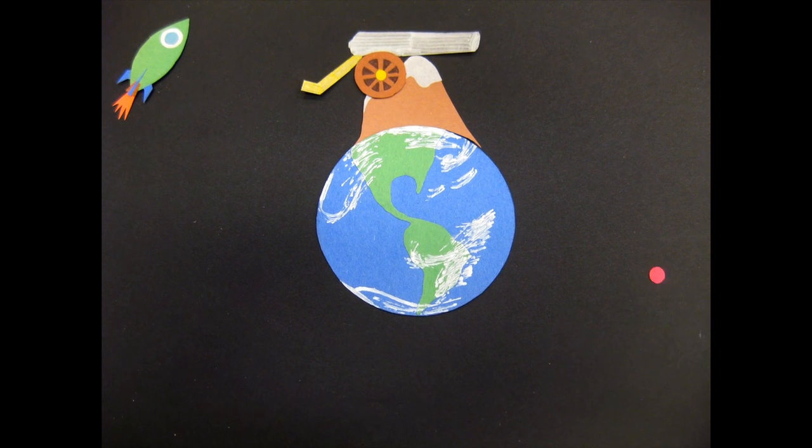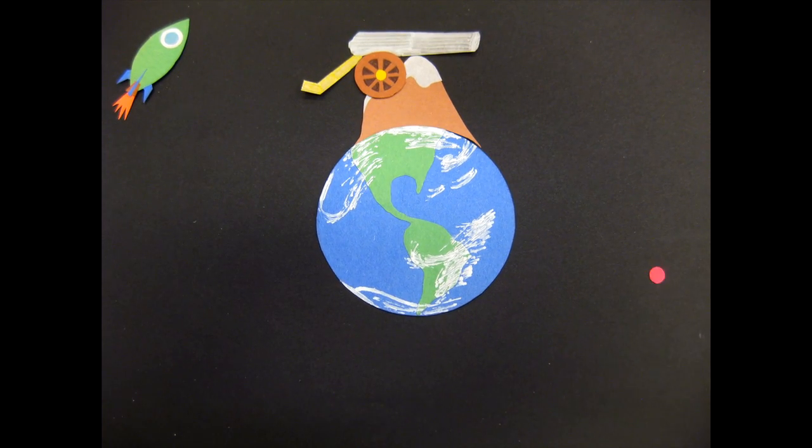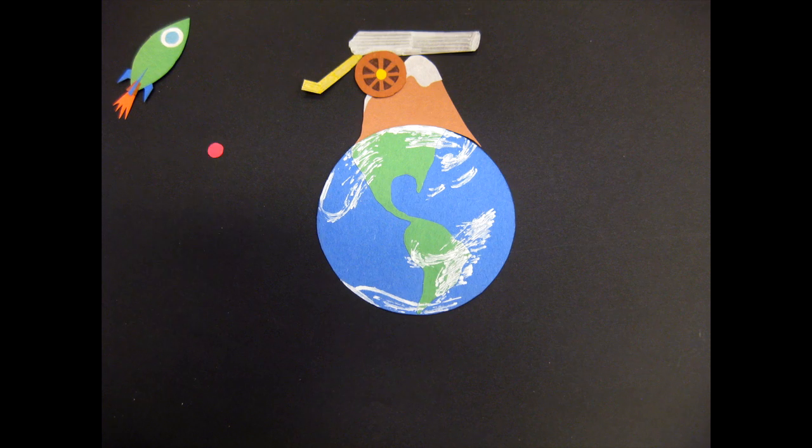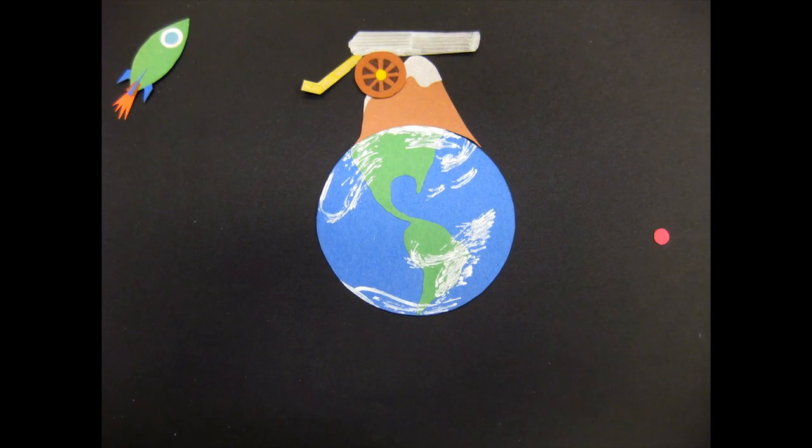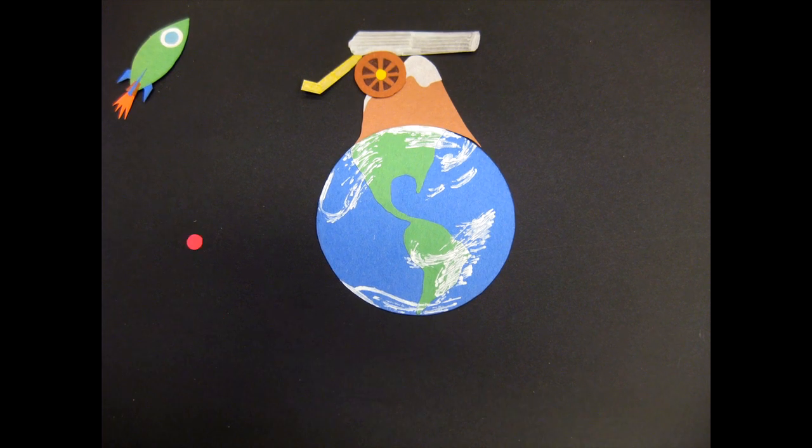When we shoot the ball fast enough, it still curves towards Earth. But the curve of the parabolic arc is the same as the curve of Earth's surface. So the ball is falling towards Earth, but it's going so fast in the horizontal direction that it never hits the surface of Earth.